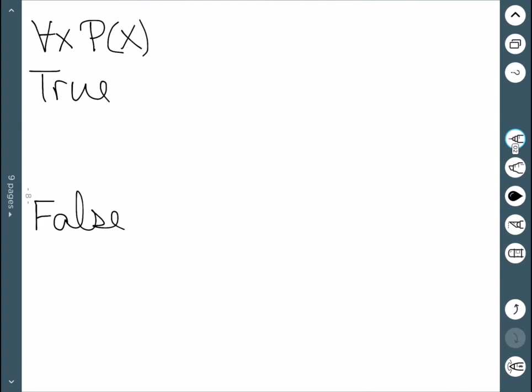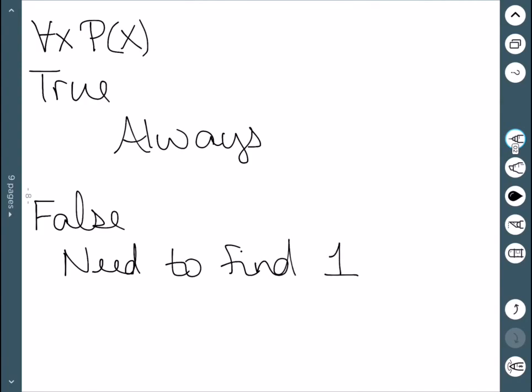As a brief summary: For the universal quantifier, if it's true, it's always true. If it's false, we only need to find one counterexample—one number where it doesn't work or one situation giving a false statement. There may be more than one, but we only need to find one.